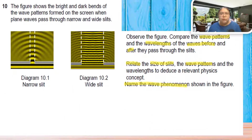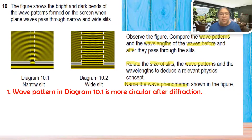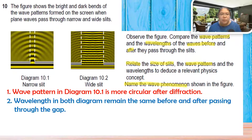The last question shows two diagrams: 10.1 is a narrow slit and 10.2 is a wider slit. Compare the wave pattern and wavelength before and after passing through the slit. Wave pattern in 10.1 is more circular after diffraction. The wavelength in both diagrams remains the same before and after passing through the gap.